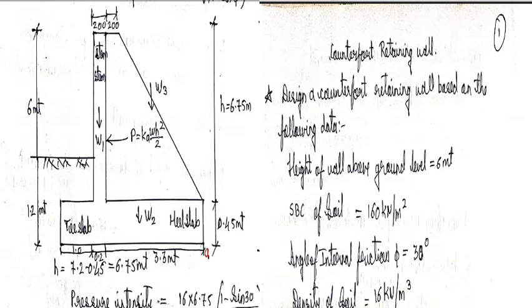You can see in the previous design we have drawn the cantilever retaining wall. So it had heel slab, toe slab, shear key and stem.